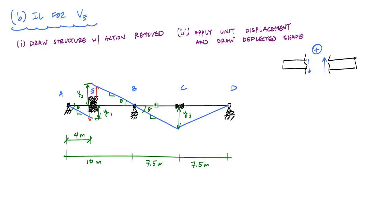And we can go ahead and calculate these y1s and y2s and y3s using geometry. And there's a couple ways to do it. If I were able to continue this line, and because the slopes are the same, I know that this distance here would be 1. I can use similar triangles, which tells me that y1 over 4 meters is equal to 1 over 10 meters. And that tells me y1 is equal to 0.4.